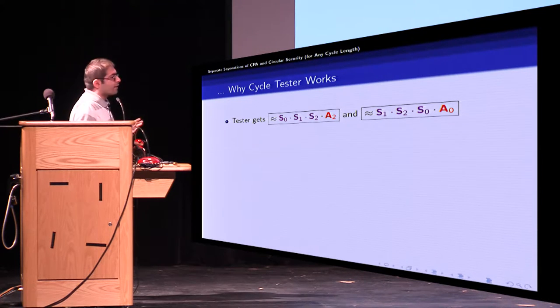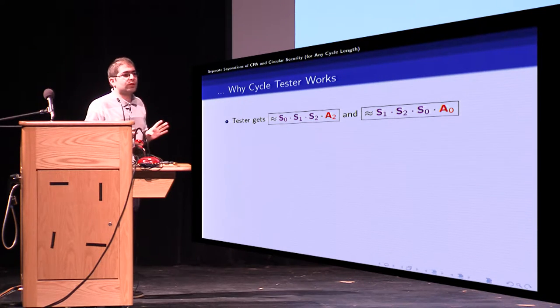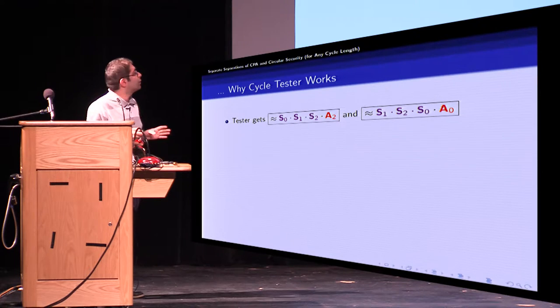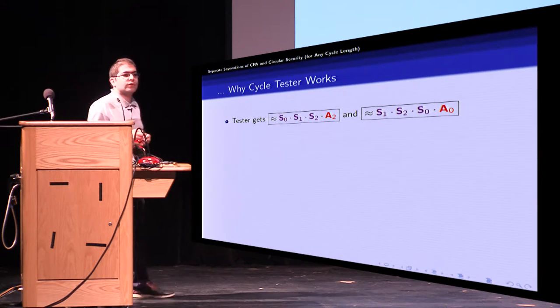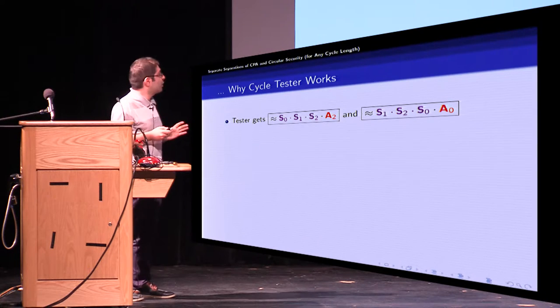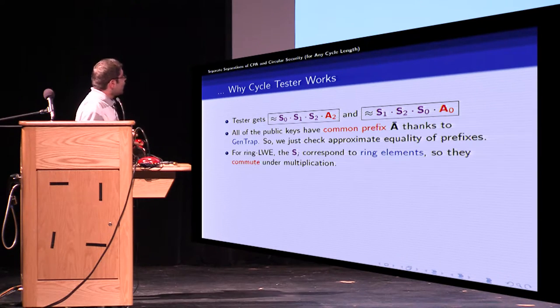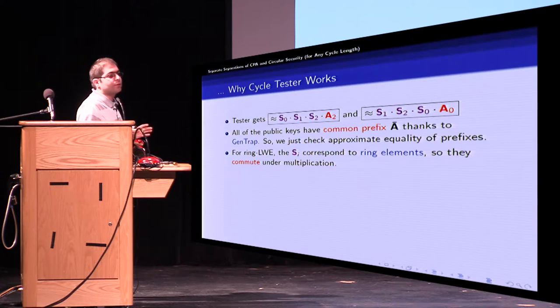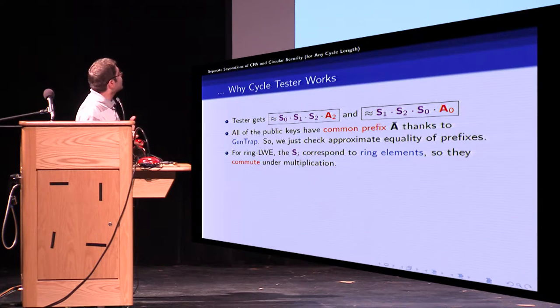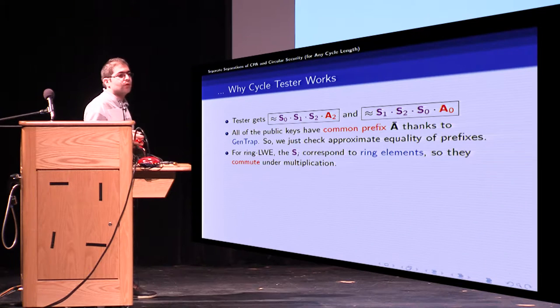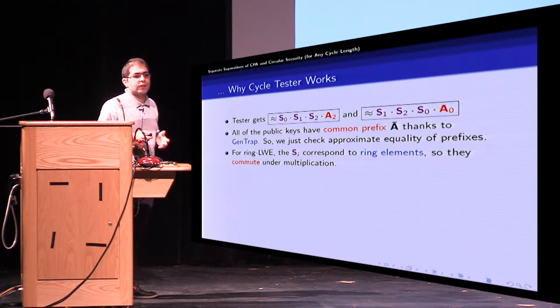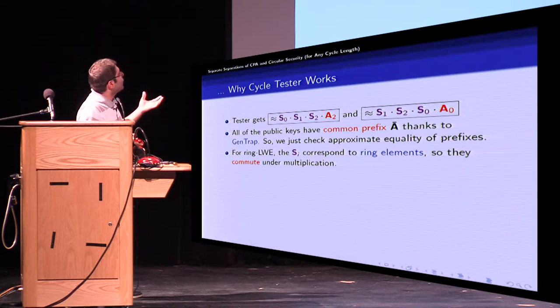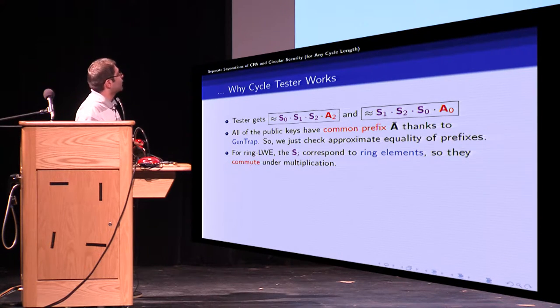If we do the same thing similarly for the other chunk what we get is S_1 S_2 S_0 A_0. So tester gets almost equal chunks except with different public keys and different order but it's not so difficult to address these issues. The first point is that thanks to GenTrap all of the public keys have common prefix A bar and the second point is that in ring LWE we know that the S_i correspond to ring elements so they commute under multiplication. So that's why cycle tester works in ring setting.